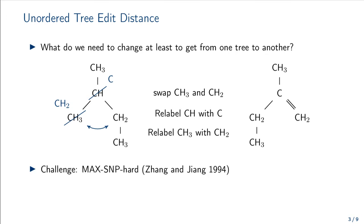Unfortunately, the unordered tree edit distance is max SNP hard. So, the best we can do is to search the exponential space of tree edits as efficient as possible. That is where the A-star algorithm comes into play.